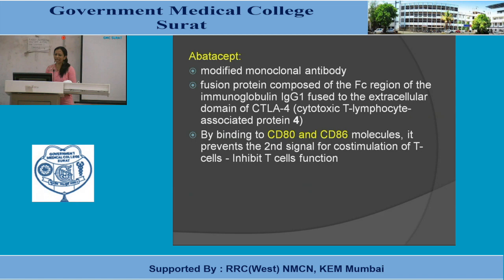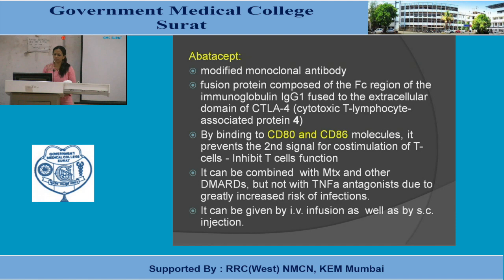Abatacept is a modified fusion protein composed of human IgG1 fused to the extracellular domain of CTLA-4 (cytotoxic T lymphocyte-associated protein-4). By binding CD80 and CD86 molecules, it prevents co-stimulatory signals for T cell activation. It can be combined with methotrexate and other DMARDs, but not with TNF-alpha antagonists, due to severely increased infection risk from combined immunosuppression. It can be given by IV infusion or subcutaneous injection.